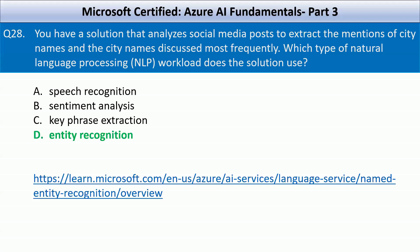Named entity recognition is the NLP workload that identifies and classifies entities such as city names, people, organizations, and dates in text. Since the solution analyzes social media posts to extract mentions of city names and determines which cities are discussed most frequently, it aligns with entity recognition.